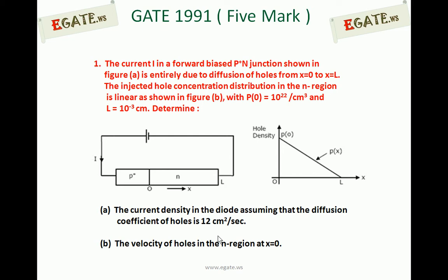We need to calculate the current density in the diode assuming the diffusion coefficient of holes is 12 centimeter square per second, and the velocity of holes in the N region at X equal to 0, that is at the junction. Let's see how to solve this problem. It is a FIMA question, so there will be no options.